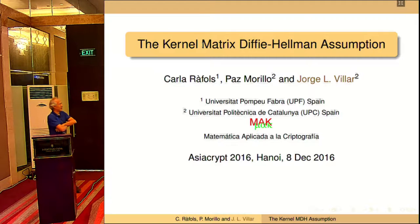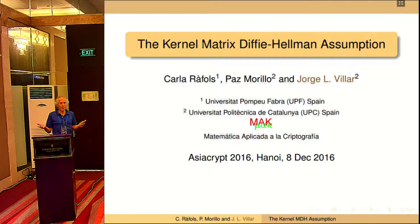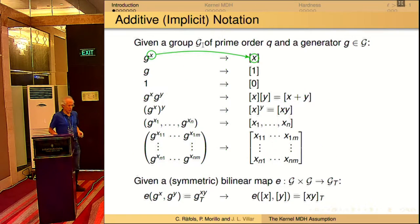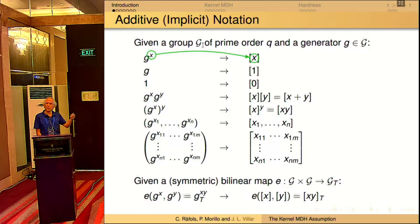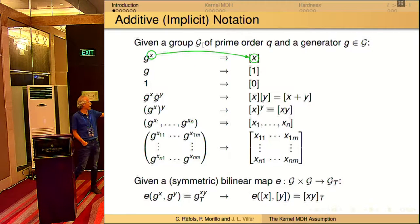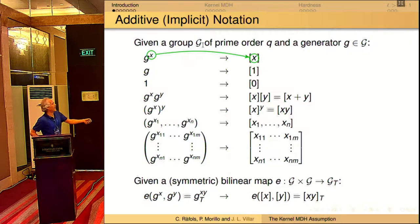I'm going to talk about these families of matrix problems that were introduced in Crypto 2013. We aim to enlarge the family of problems that can be modeled with this algebraic framework. This is the now almost standard notation for this kind of problems. We use additive notation because it is very convenient to perform algebraic operations, and we use this bracket notation because it is very convenient for matrices and vectors.